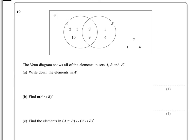In question 19 we're given a Venn diagram that shows elements of A, B and the complete set epsilon. We're told to write down the elements in A dash, and what that means is not in A. So we can see that A is essentially encapsulated with everything here. So the elements that are not in A is essentially everything else.